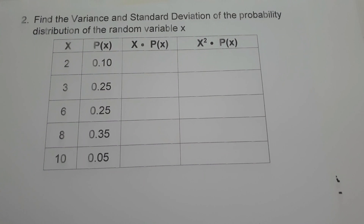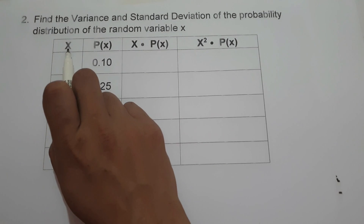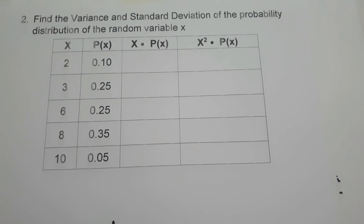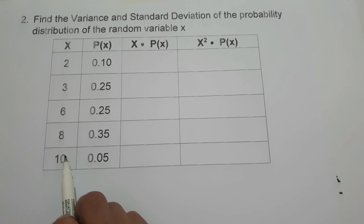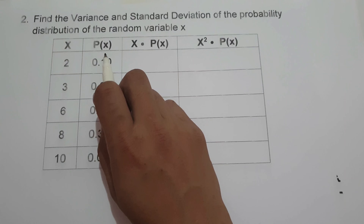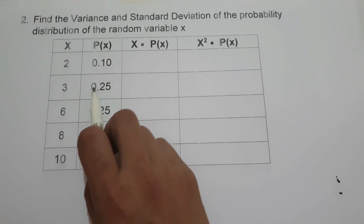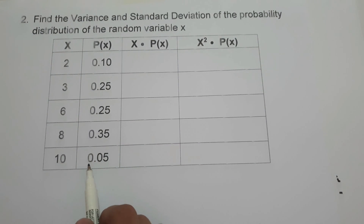For our last example, we are going to find the variance and standard deviation of the probability distribution of the random variable x. In the given table, we have the value of x and p(x). x is the value of the random variable: 2, 3, 6, 8, and 10. And p(x), the probability of random variable x, is 0.10, 0.25, 0.25, 0.35, and 0.05.